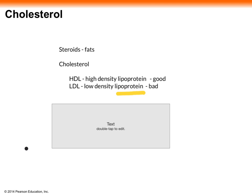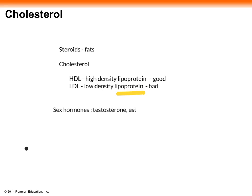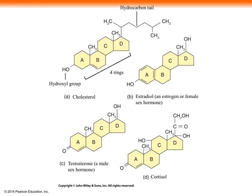Also under steroids, and derived from cholesterol, are sex hormones—including testosterone, estrogens, and progesterone—as well as other hormones like cortisol. A picture of cholesterol shows its carbon rings, and you can see that estrogen, testosterone, and cortisol all look very similar to cholesterol, because they have been derived from it.